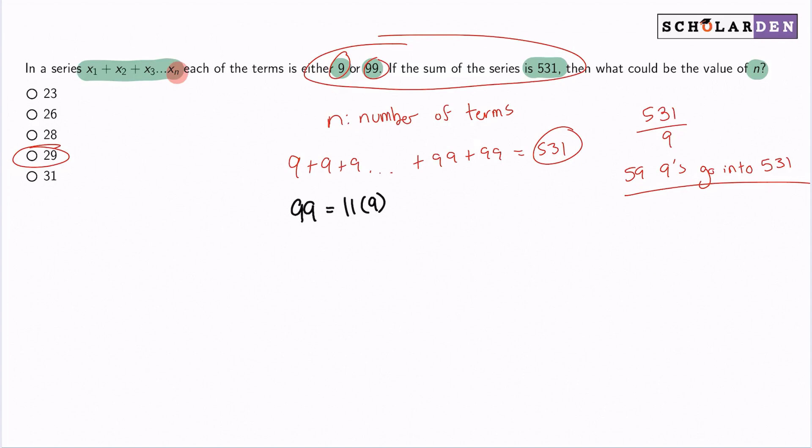So since 11 nines make up 99, we see that initially we can have 59 nines. Because 531 divided by 9 is 59. So we can have 59 nines, which means n equals 59. Do we see that answer there? No.